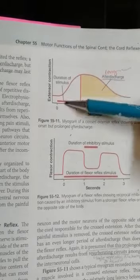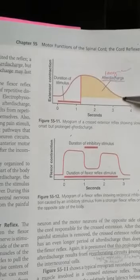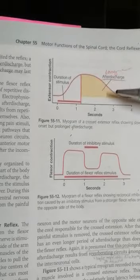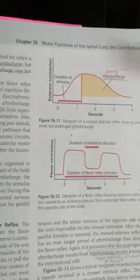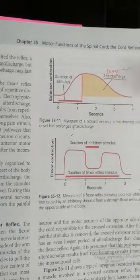Here you can see that the after discharge of the cross extensor reflex is greater than that of the flexor reflex, and the duration of the stimulus is smaller than the after discharge. This long after discharge is important to prevent inappropriate flexion and extension of the opposite limb.